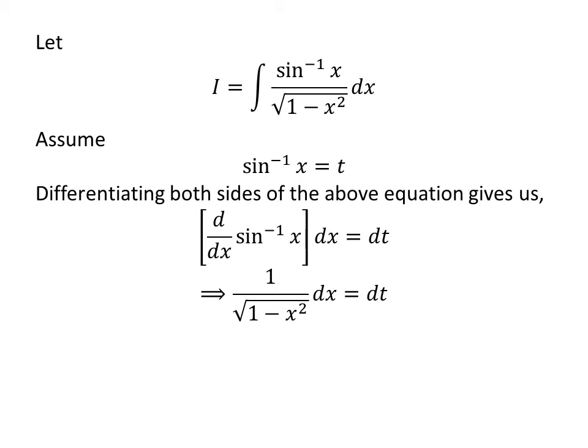As we know, derivative of arc sine of x with respect to x is equal to 1 upon square root of 1 minus square of x. So, 1 upon square root of 1 minus square of x times differential of x is equal to differential of t.